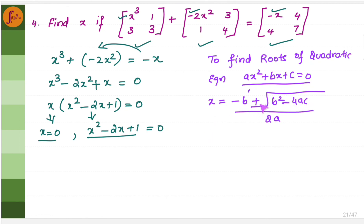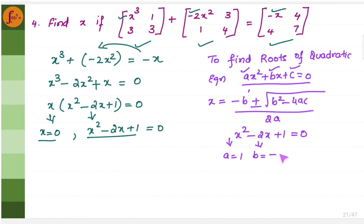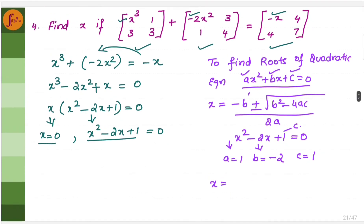For x squared minus 2x plus 1, the coefficients are a equals 1, b equals minus 2, and c equals 1. Substituting into the quadratic formula: x equals minus of minus 2 plus or minus root of (minus 2 squared minus 4 into 1 into 1) divided by 2 into 1.